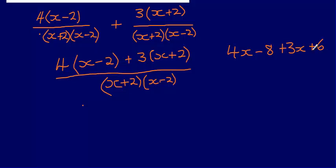If I now collect that together, that gives me 7x - 2. And actually what I can see here is that my final answer is just going to be (7x - 2)/((x+2)(x-2)).